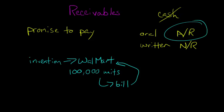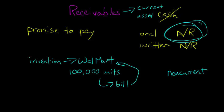An account receivable is an asset, and it's almost always a current asset because you expect to get paid within the next year or the operating cycle. But that's not always the case — if for some reason it's longer than a year or longer than your operating cycle, it could actually be a non-current receivable. But in most cases, receivables will be in the current asset section of the balance sheet, and for the most part they'll be accounts receivable — that's the most common.